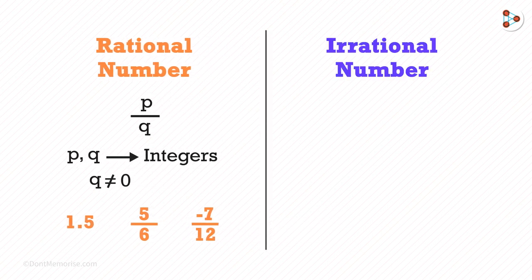So what is an irrational number? An irrational number is a number which cannot be written in the P over Q form. The examples are square root of 2, square root of 3 or pi.